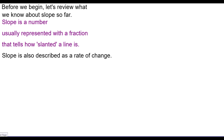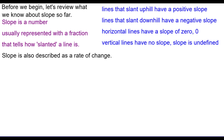Slope is also described as a rate of change. Lines that slant uphill have a positive slope. Downhill lines have a negative slope. Horizontal lines have a slope of zero, and vertical lines have no slope — the slope is undefined.